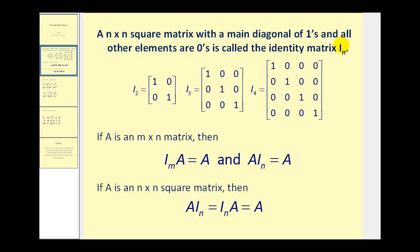The identity matrix is denoted with a capital letter I. Since it is a square matrix, we usually denote it with a subscript — for example, I₂ for a two by two, I₃ for a three by three, I₄ for a four by four identity matrix, and so on. The main diagonal will always be ones and all other elements zeros.